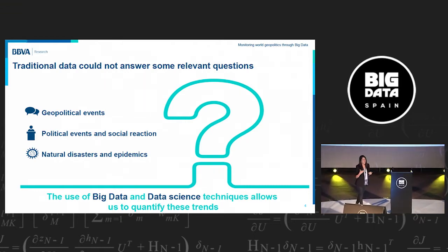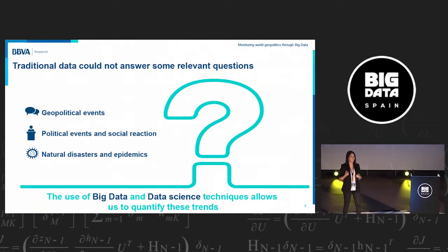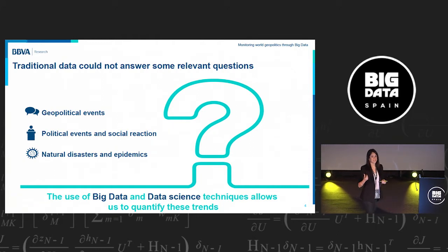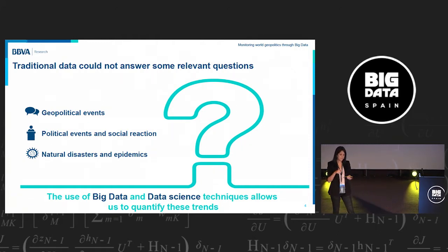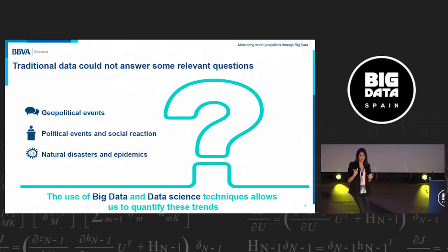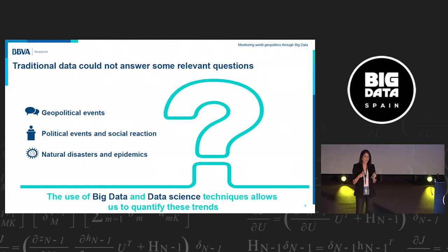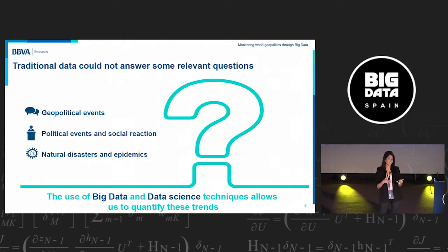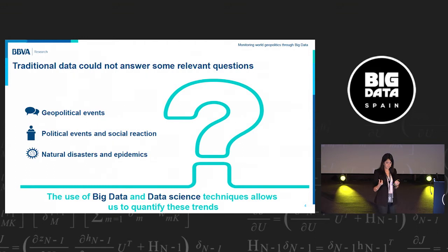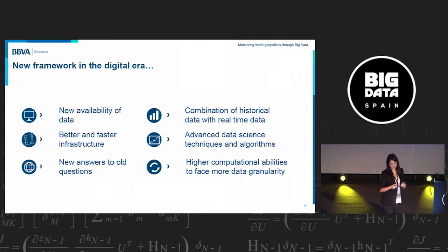The use of big data and data science techniques allows us to cover this gap and measure trends for which until now we had no quantitative information — only qualitative information. This poses a milestone in this research area, since now we know what is happening in the world in real time and can complement our traditional data using this source of information to better understand what is happening in society.